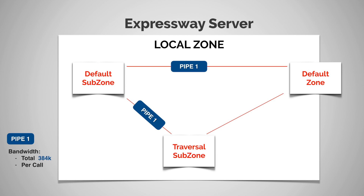Now let's say we have a SIP endpoint registered to the default subzone, and it's going to call another SIP endpoint in the default zone somewhere out there. We have a 384k call going on between them. Now let's say while that call is going on, we have a completely different endpoint.